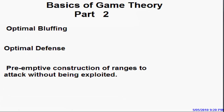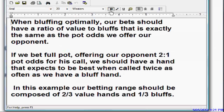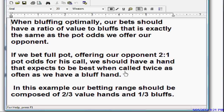Last time we went over optimal bluffing, and we did it from the offensive angle. Basically we said that when bluffing optimally, our bet should have a ratio of value to bluffs that is exactly the same as the pot odds we offer our opponent. For example, if we were to bet full pot, offering our opponent two-to-one pot odds for his call, our betting range should be composed of two-thirds value hands and one-third bluffs.